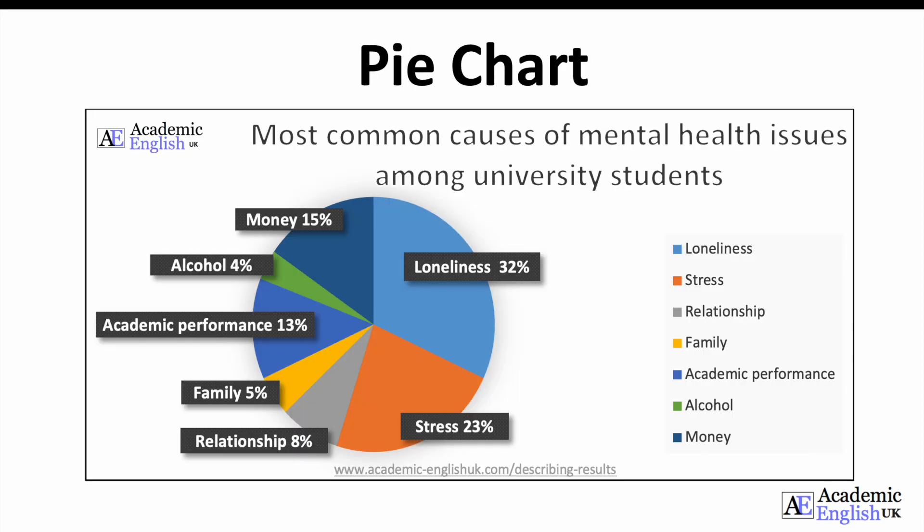This pie chart has been created from a questionnaire asking 500 students what their main causes of mental health issues at university were. Pause the slide and analyse the chart. Pick out and write down any significant points of data.